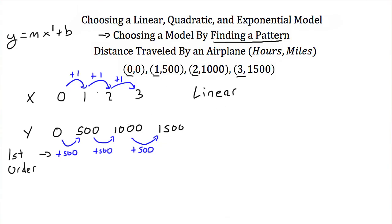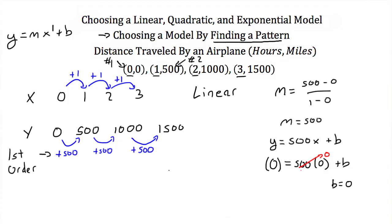Now I just find my linear model the same way I did before. I'm going to find my slope. I'm going to choose (0,0) as point 1 and (1,500) as point 2. My slope will be equal to 500 minus 0 over 1 minus 0. So my slope is 500. I plug that in. I get y equals 500x plus b. Now I pick any of these points, plug them in for x and y and solve for b. I'm going to pick my first point, (0,0), and plug in 0 for y. That's equal to 500 times 0 for x plus b. 500 times 0 is just 0, so we'll end up with b equaling 0. So my model then is just y equals 500x.